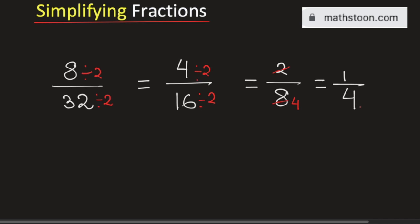So, 1 by 4 is the simplified reduced form of the fraction 8 by 32. And this is our final answer. Thank you for watching.